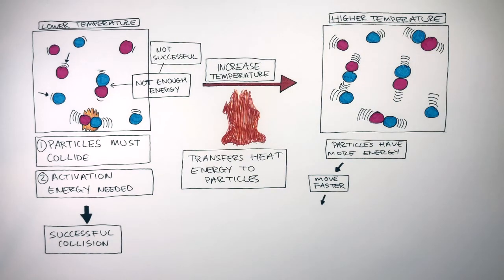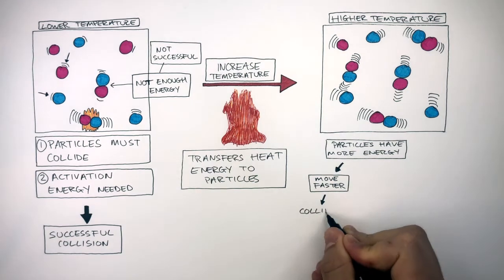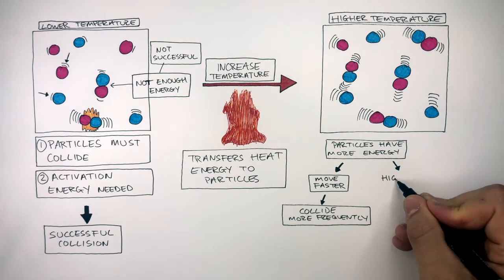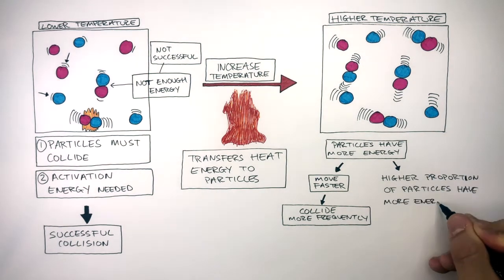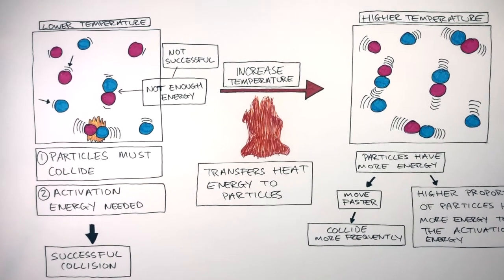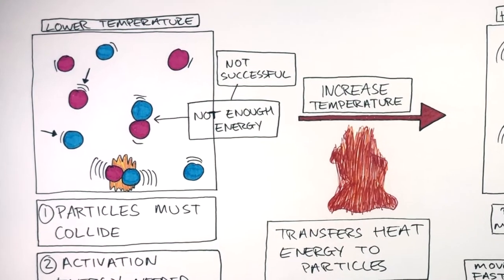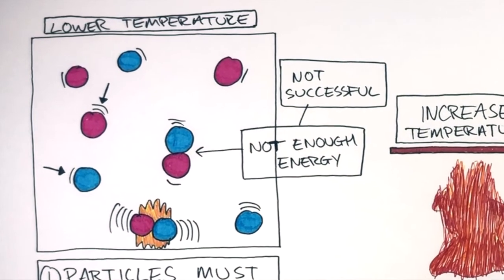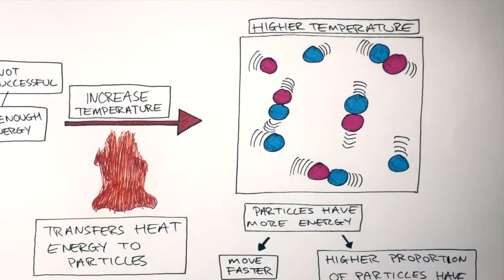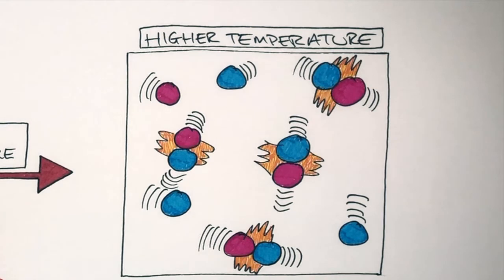The higher energy stored causes the particles to move faster, causing them to collide more frequently. But not only this — the extra energy stored now means there is a higher proportion of particles which have more energy than the activation energy. Previously, at a lower temperature, when there were collisions, particles may not have had the activation energy, so there would not have been a successful collision. But now at higher temperatures, because the particles store more energy, when the particles do collide, it's much more likely for a successful collision to take place, as there is a higher proportion of particles which have the activation energy.